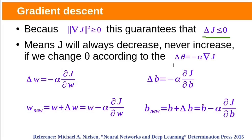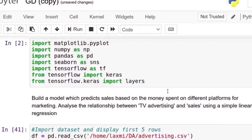If we change θ according to this rule — θ is the vector of parameters — writing it for individual parameters: the change in w should be −α times the partial derivative of J with respect to w in order to minimize J, and similarly for bias b. So the new weight w = w − α · (∂J/∂w), and the new bias b = b − α · (∂J/∂b).